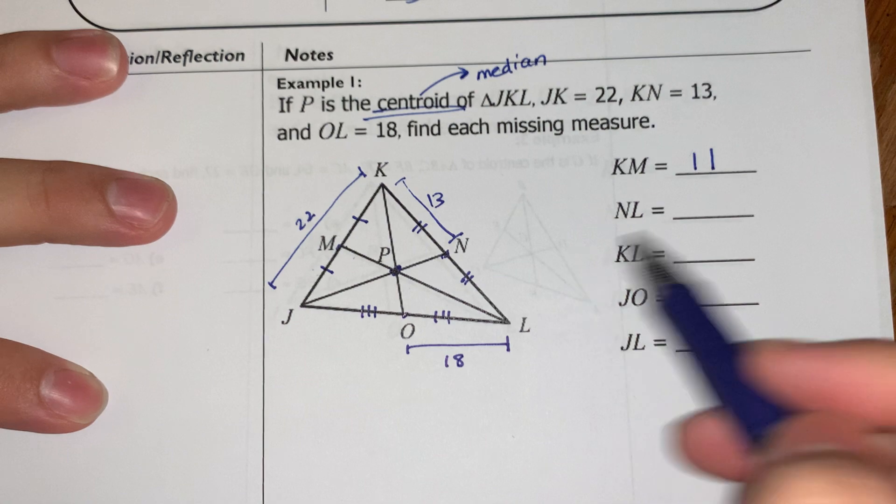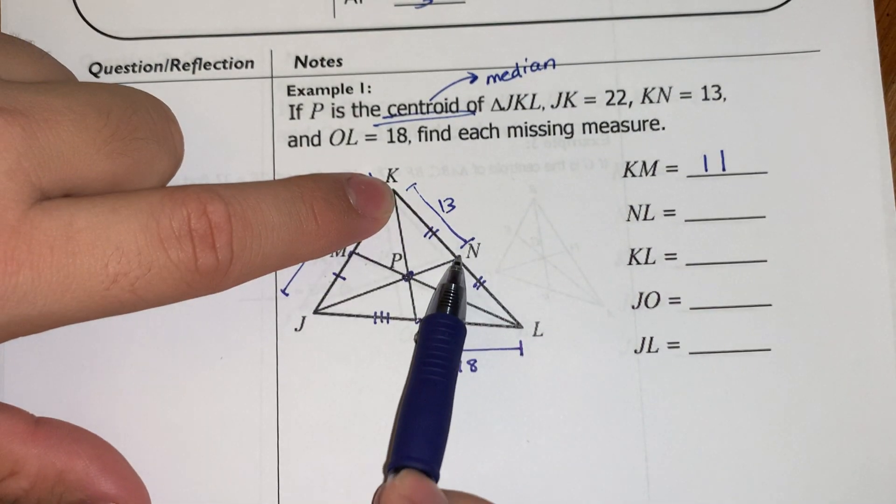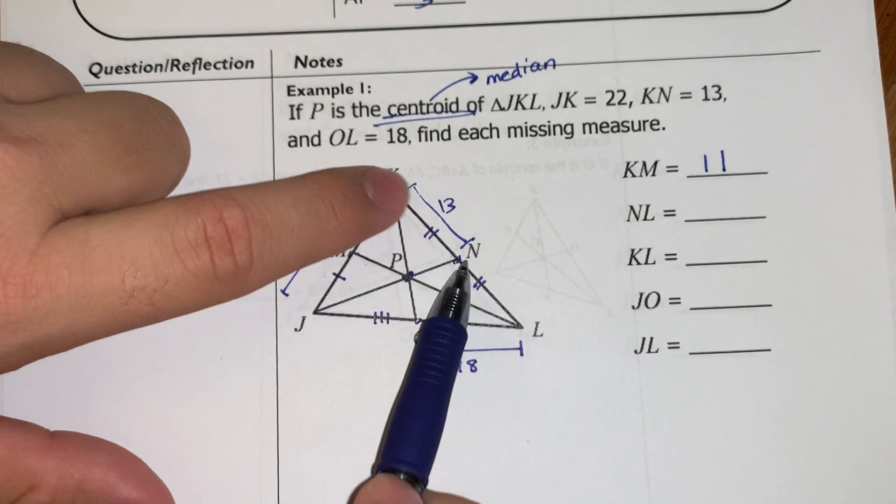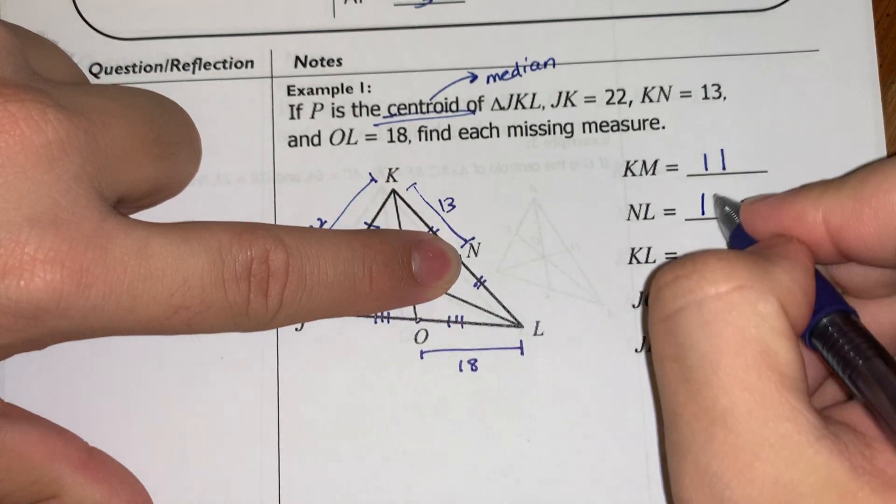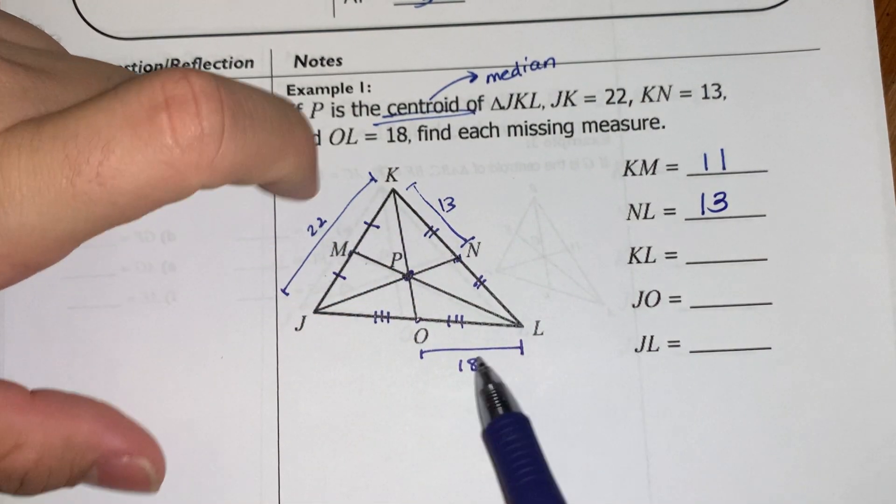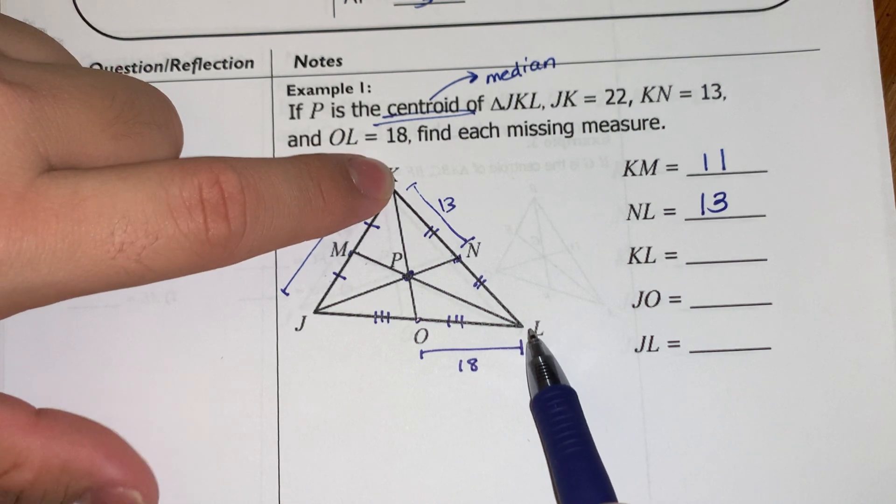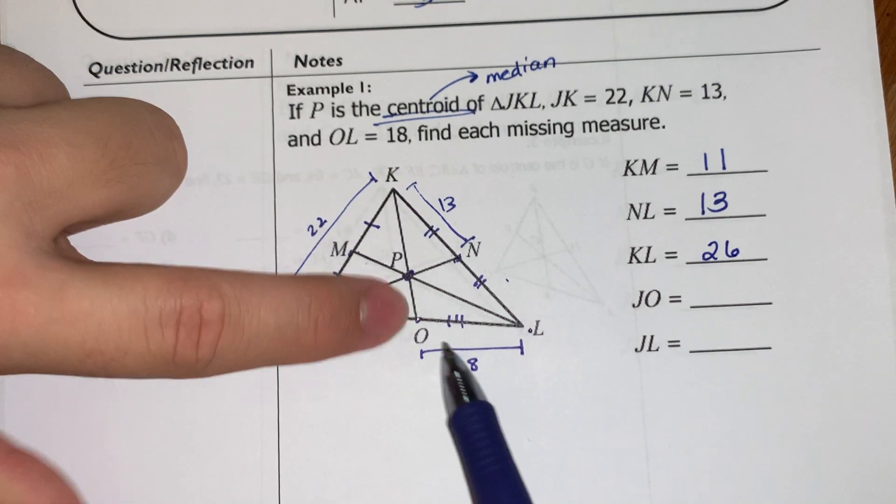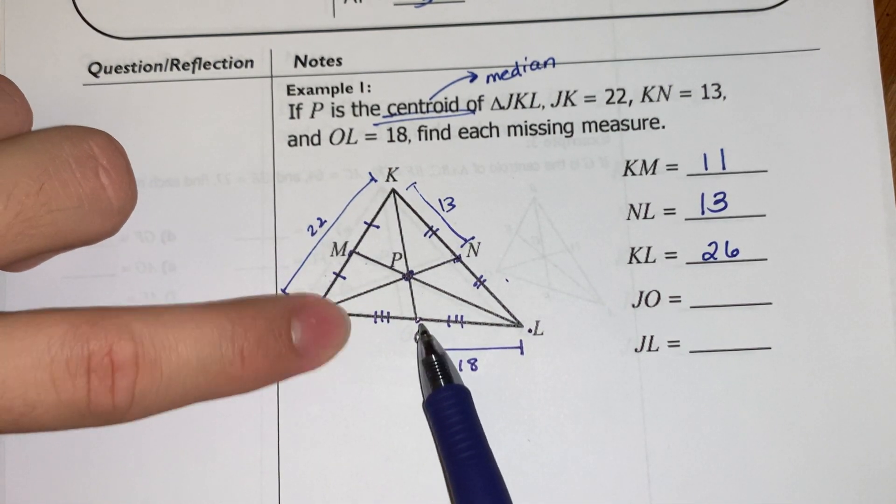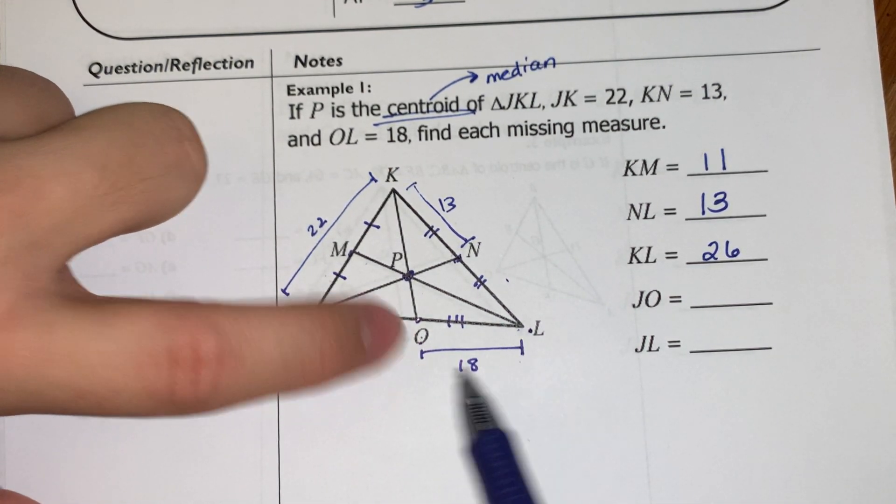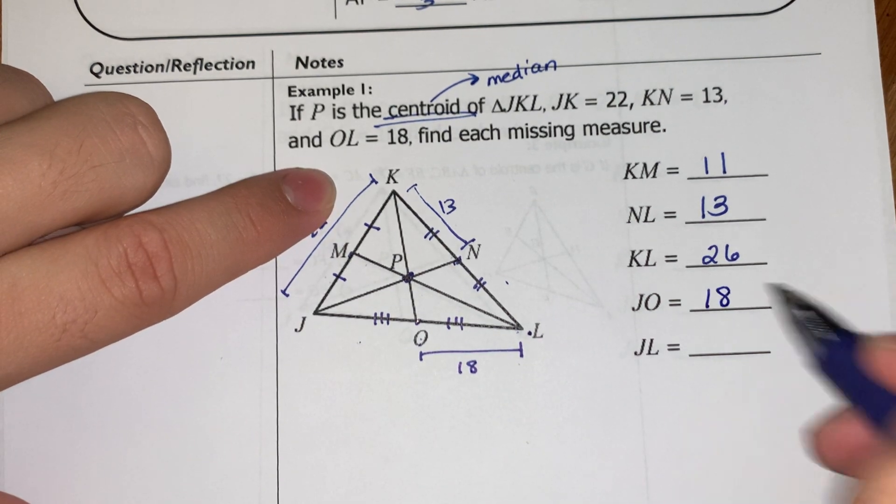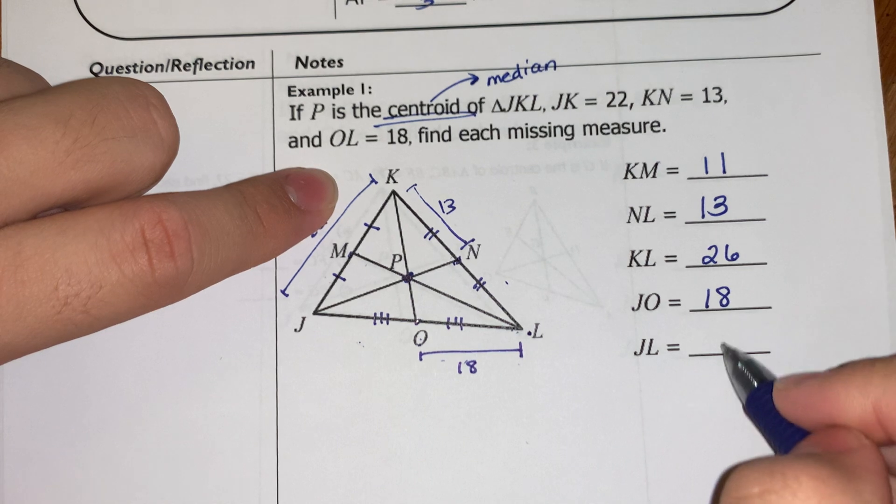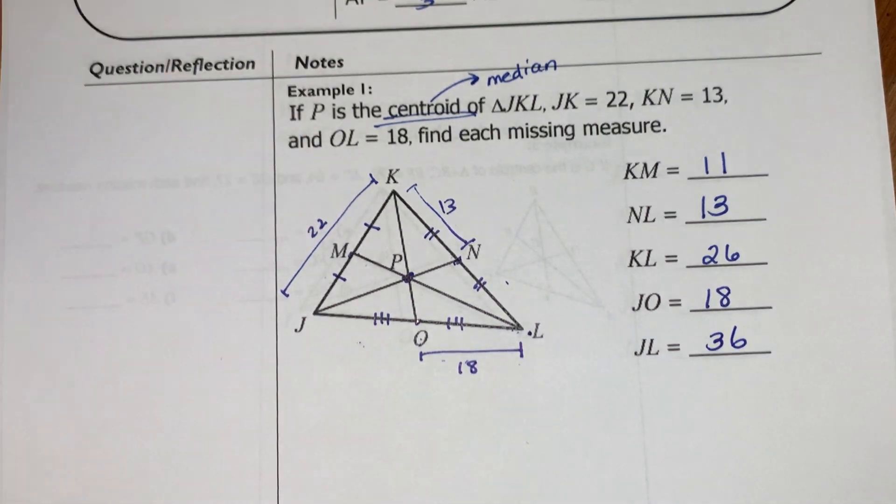And NL, that's over here. So, again, if I know that this is the middle of that side, then this is equal to that. So if this is 13, then so is NL. Here I have KL, that's the whole distance. So that's basically 13 twice, which is 26. Here I have JO. I got to remember this side is congruent to that side. So 18 over here. And then the whole distance is 18 two times, which is 36. We started you off a little bit easier. We'll get a little bit harder as we go along, but nothing too crazy.